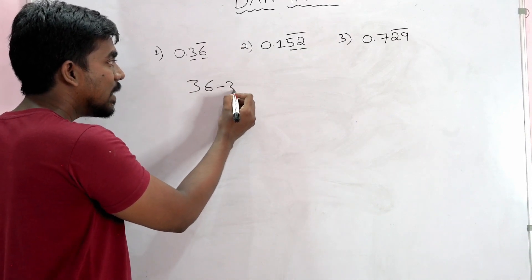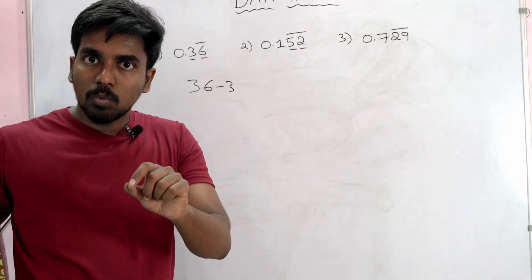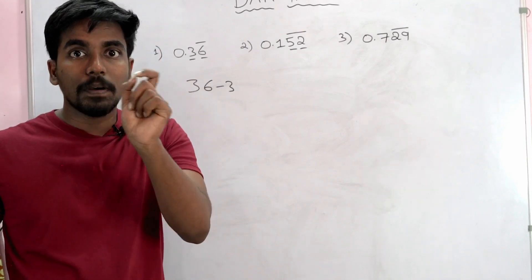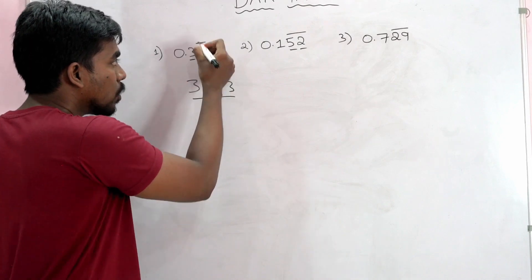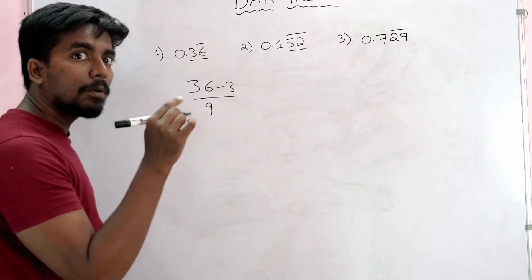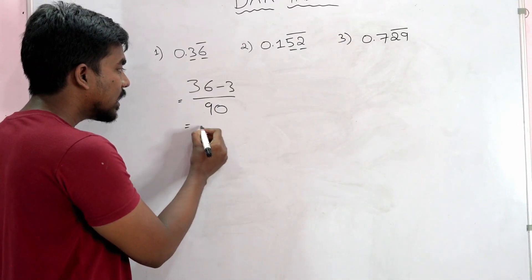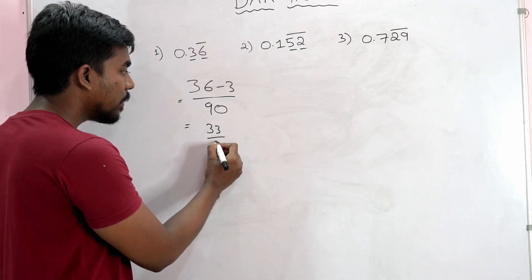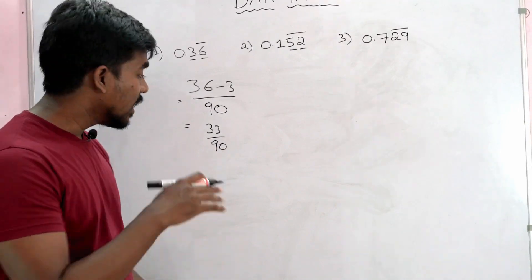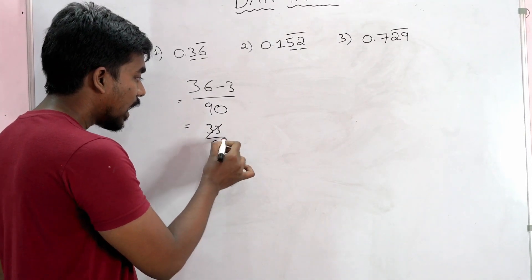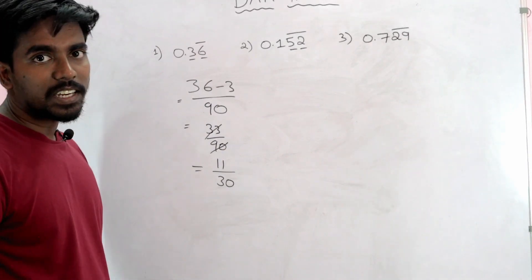Now we have 36, so we have 36 minus 3. You have minus here, and that number will minus here. You have 36 to 3 — so 33 divided by 90. Now choose to cancel. 3 elevens are 33 and 3 threes are 9, so 11 by 30 is the answer.